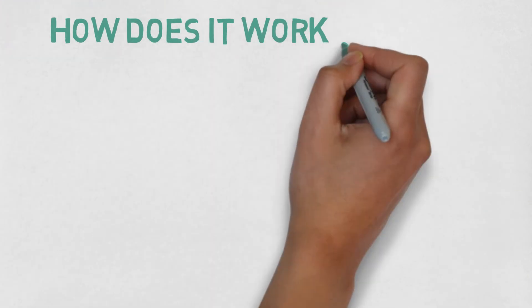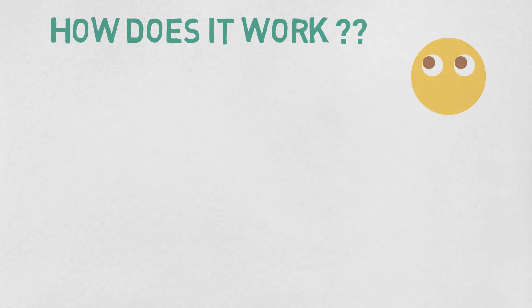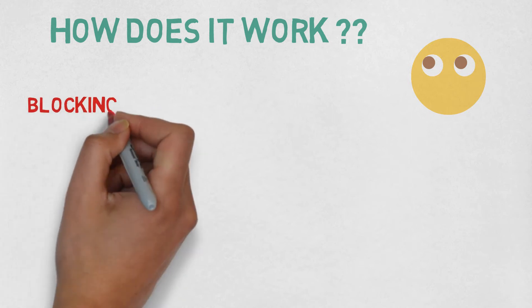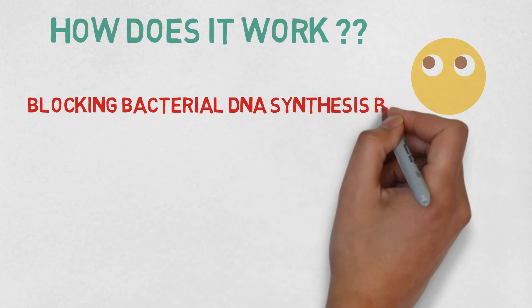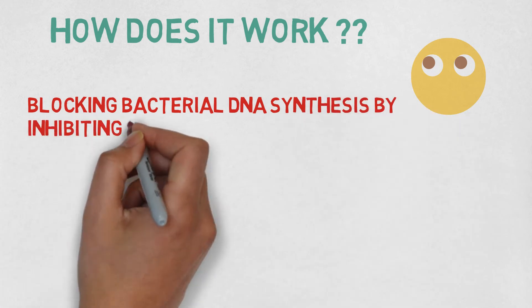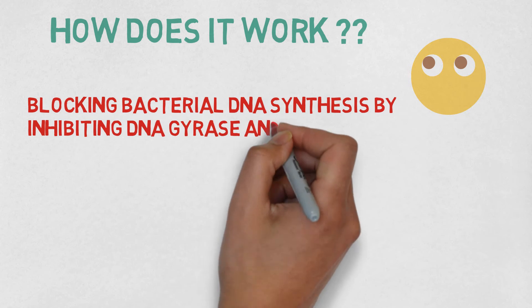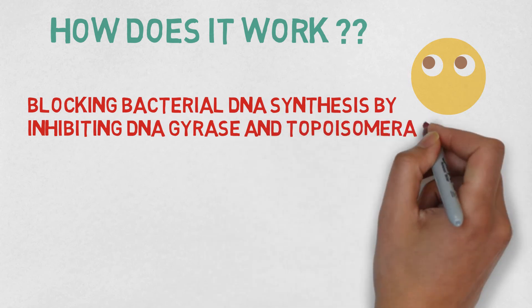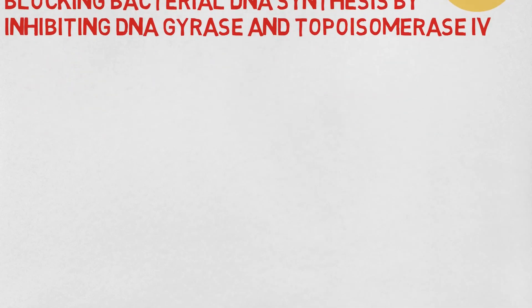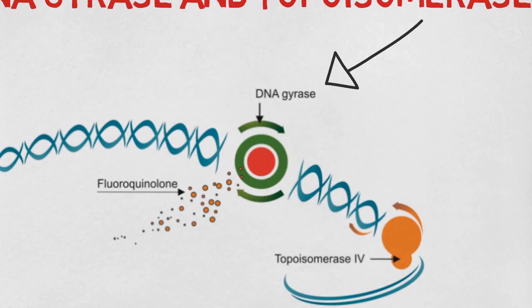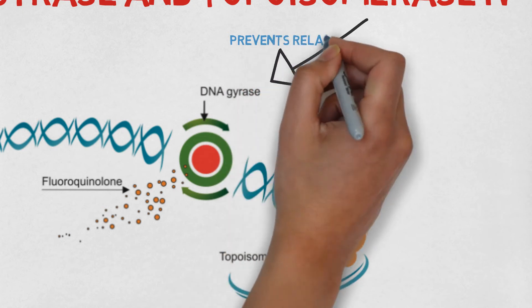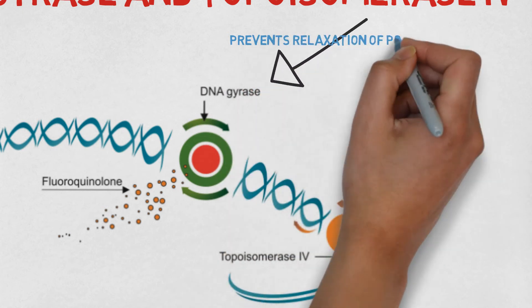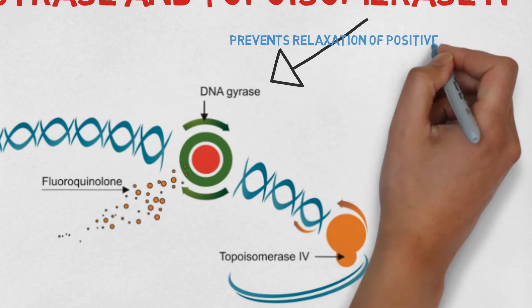How does it work? Fluoroquinolones work by blocking bacterial DNA synthesis by inhibiting topoisomerase 2, which is also known as DNA gyrase, and inhibiting topoisomerase 4. Inhibition of DNA gyrase prevents the relaxation of positively supercoiled DNA, which is crucial for the transcription and replication process of DNA.